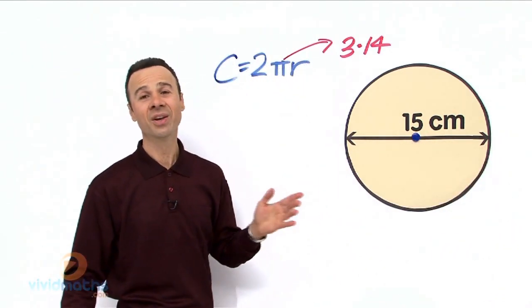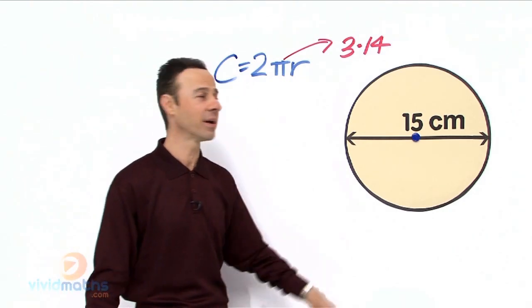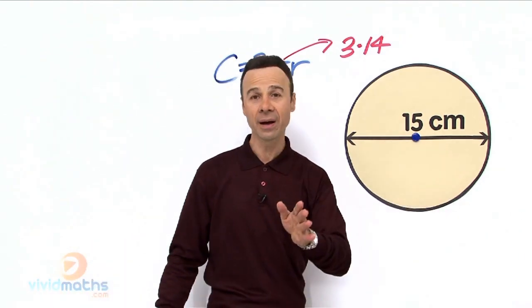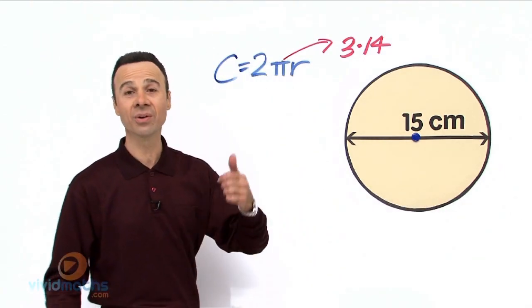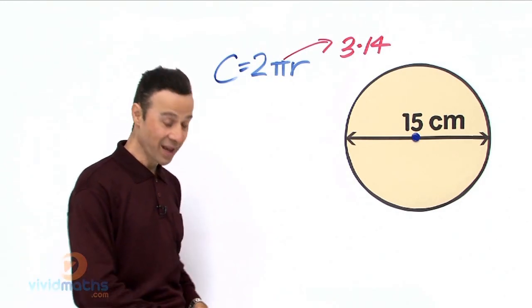Now, if you want to find the radius, you have to halve the diameter, but if you want to do it quickly, you just use the second formula, which is as follows.